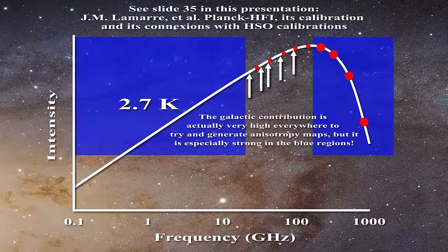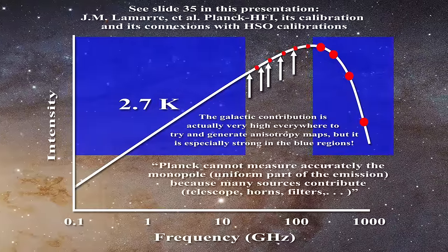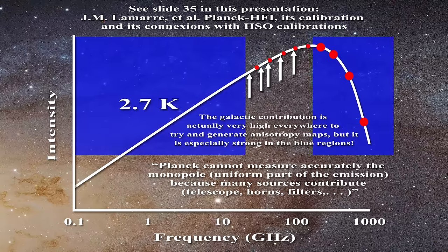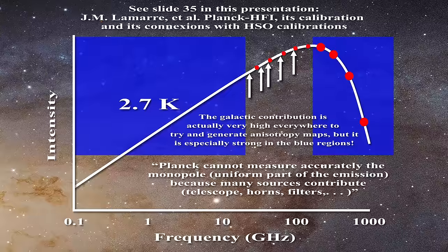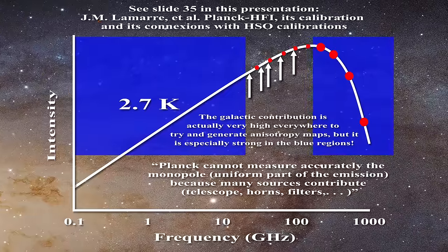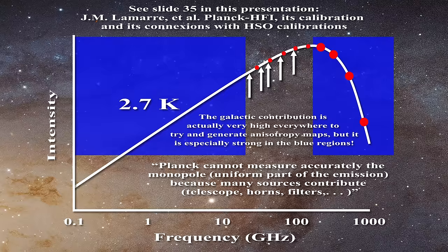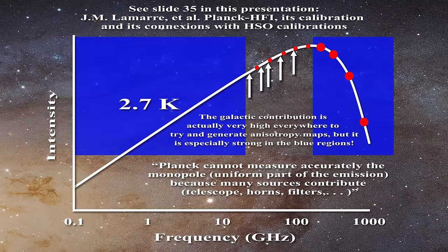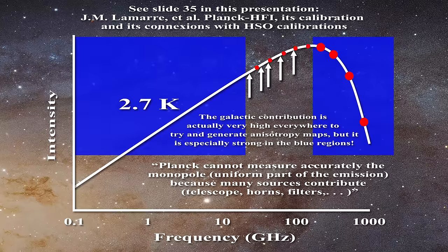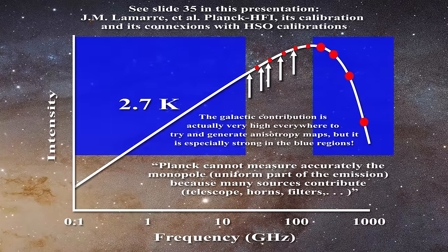Relative to the HFI, the Planck team writes, Planck cannot accurately measure the monopole, uniform part of the emission, because many sources contribute, telescopes, horns, filters. Thus, it is claimed that the HFI bolometers, though operating in absolute mode, can receive thermal photons in the microwave from the spacecraft itself, much of which is in a 50 Kelvin environment.